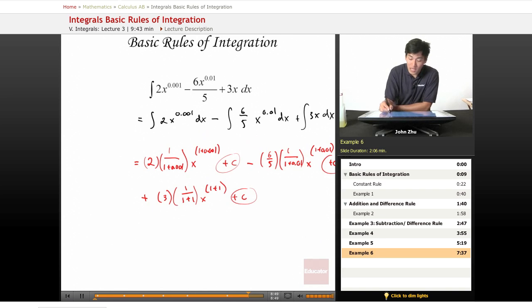Combining all these constant terms, we get 2 over 1.001 x to the 1.001 minus 6 over 5.01.